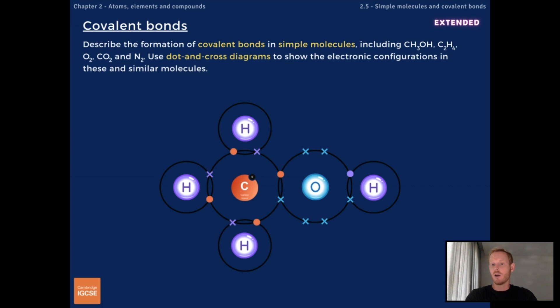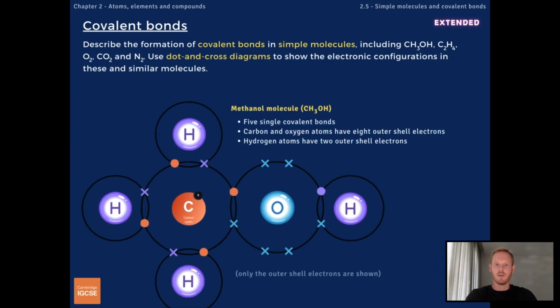For extended, you need to describe the formation of covalent bonds in simple molecules with multiple bonds. The first is methanol, which has the chemical formula CH3OH. One carbon atom forms three single covalent bonds with three hydrogen atoms, and one single covalent bond with oxygen. Oxygen shares another pair of electrons with a fourth hydrogen atom, giving all six atoms a full outer shell.